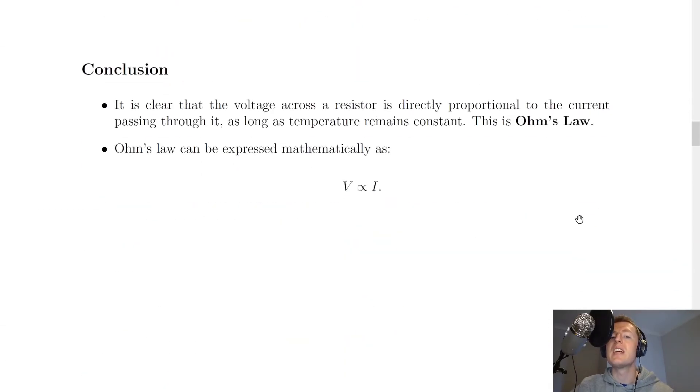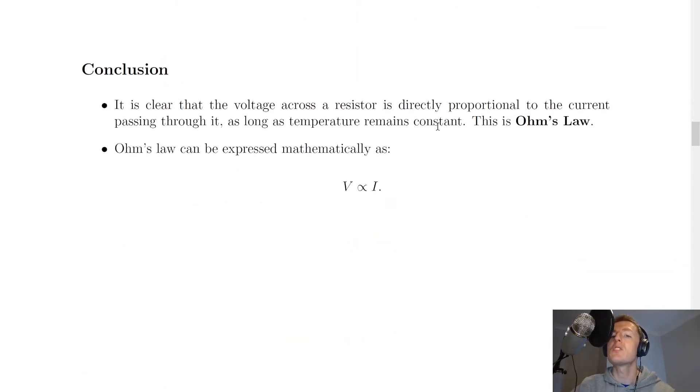But notice how we've said that it's as long as temperature remains constant. And this is key, and it's saying that our resistor has not heated up enough to cause any effects in our experiment, which is what we want. So we're saying as long as temperature remains constant, voltage is directly proportional to the current. And this will hold for any ohmic conductor like a resistor. So lastly, Ohm's law can be expressed mathematically in symbols as this thing here. So we have V, the voltage, is directly proportional to the current I.